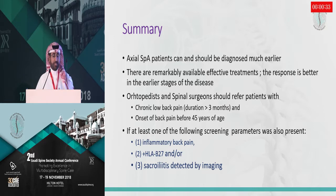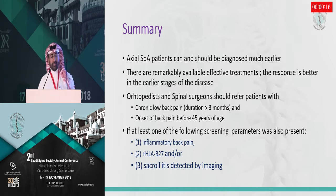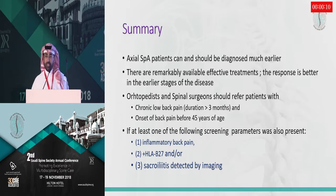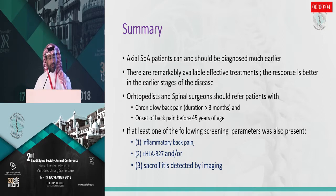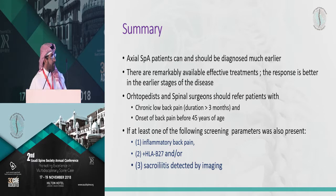In summary, axial spondyloarthritis patients can and should be diagnosed much earlier. Remarkably effective treatments are available and the response is better in earlier stages of disease — we now have biologic therapies including anti-TNFs and interleukin-17 inhibitors. Orthopedists and spinal surgeons should refer patients with chronic low back pain lasting more than three months with onset before age 45 if at least one screening parameter is present, such as inflammatory back pain, HLA-B27 positivity, or sacroiliitis on any imaging. Thanks very much.